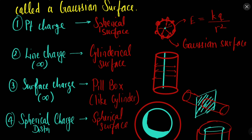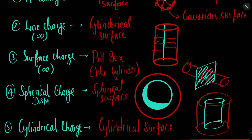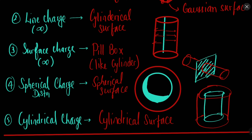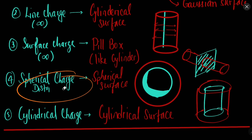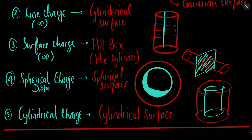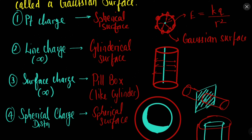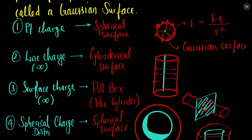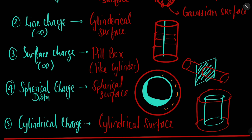Remember the line charge is infinite — it is important. If it is infinite, the Gaussian surface will be an infinite cylinder. If you have an infinite surface, the Gaussian surface will be like a pillbox, because all distances from the surface will be the same — but the surface has to be infinite for this to be applicable. For a spherical charge distribution the Gaussian surface is another sphere, and for a cylindrical charge the Gaussian surface is another cylinder. In summary, a Gaussian surface is a surface at all of whose points the electric field is the same.